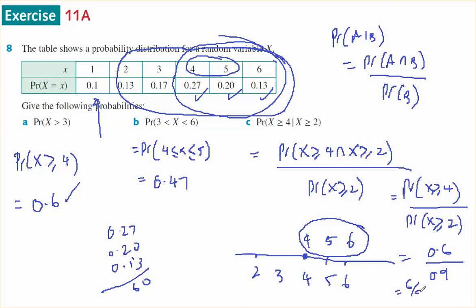So it's going to be 6 on 9, which is 3—sorry, 2 on 3. That's going to equal 2 thirds.